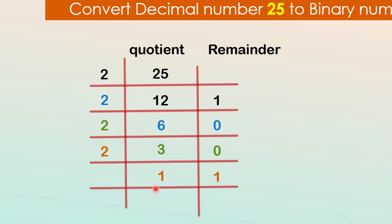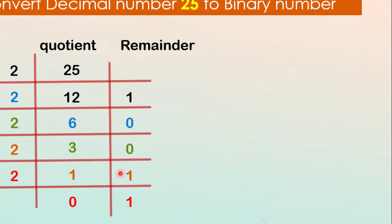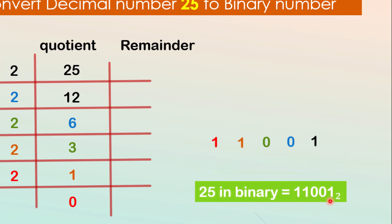Finally, we take the quotient 1 and divide by 2. 1 divided by 2 gives 0 as the quotient and a remainder of 1. We write down the remainder. Now, we write down the remainders from bottom to top: 1, 1, 1, 0, 0, 1. So, the binary equivalent of 25 is 11001.